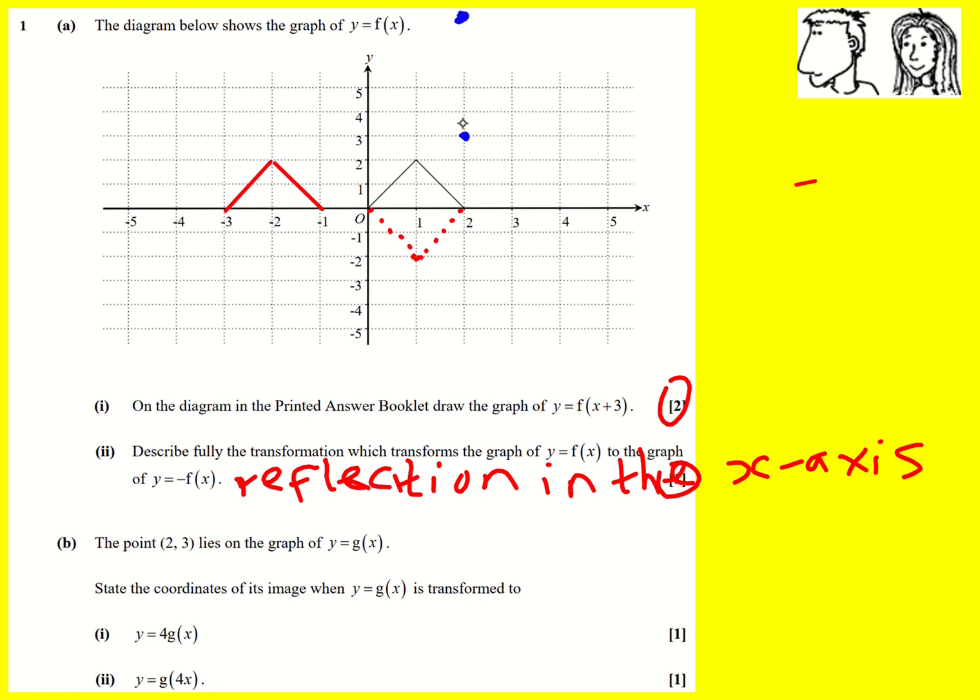And that gives us a good feel for what it's going to be, because the x coordinate is going to stay the same. I'm going to multiply my y coordinate by four. It's going to become (2,12).